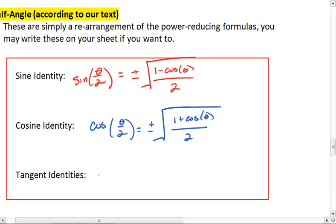And lastly, for tangent, we get the tangent of theta over 2 equals 1 minus cosine theta, all over sine theta.